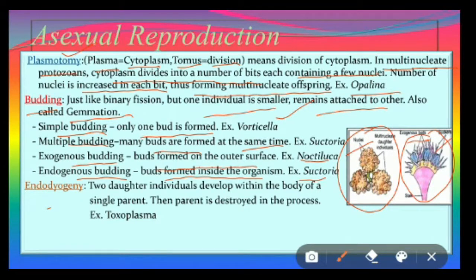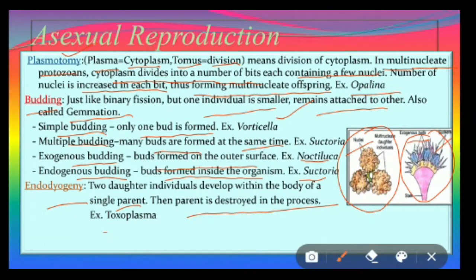In addition to binary fission, multiple fission, plasmotomy, and budding, there is endodiogeny — one more type of asexual reproduction — where two daughter individuals develop within the body of a single parent; after the formation of daughter individuals, the parent is destroyed. The best example is Toxoplasma. According to some authors, regeneration also comes under asexual reproduction, where reformation of lost parts due to injury or any other process occurs when some organelles or part of the body are lost.